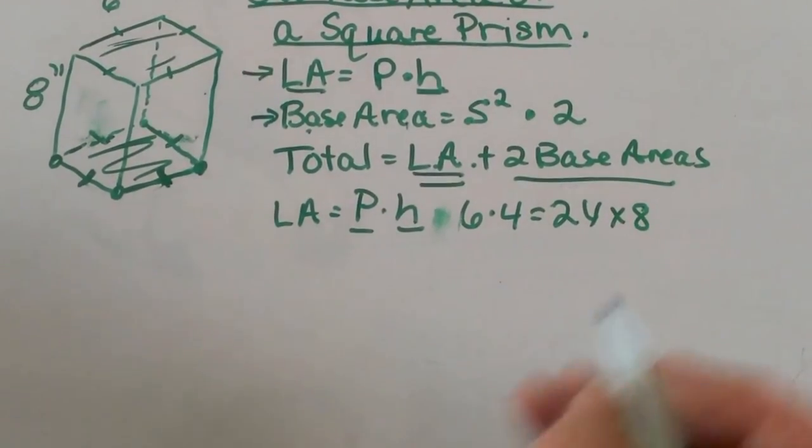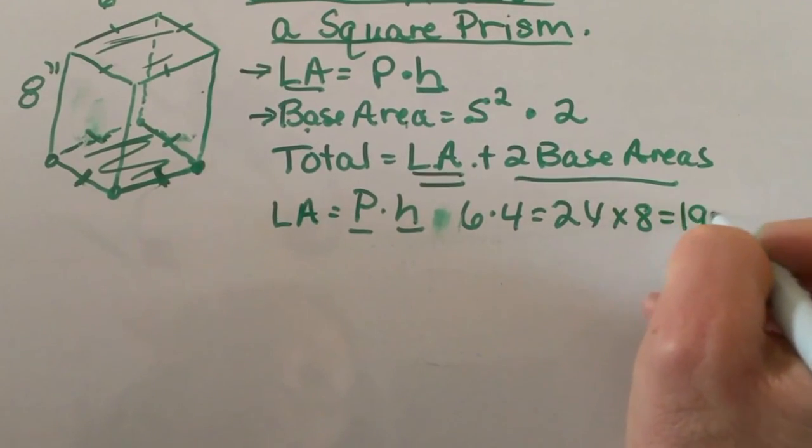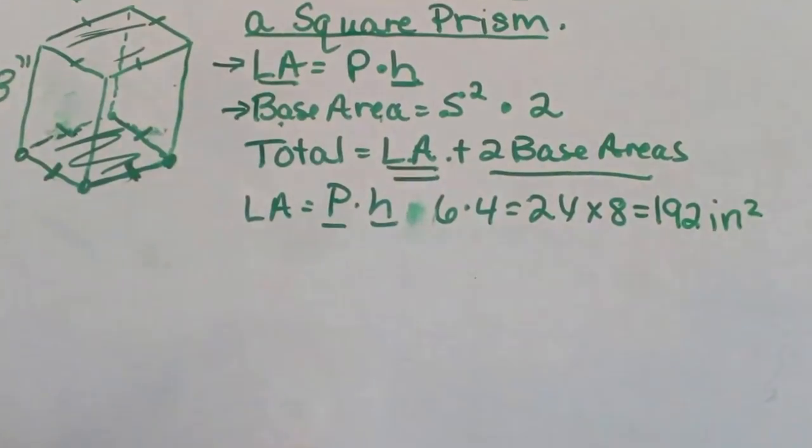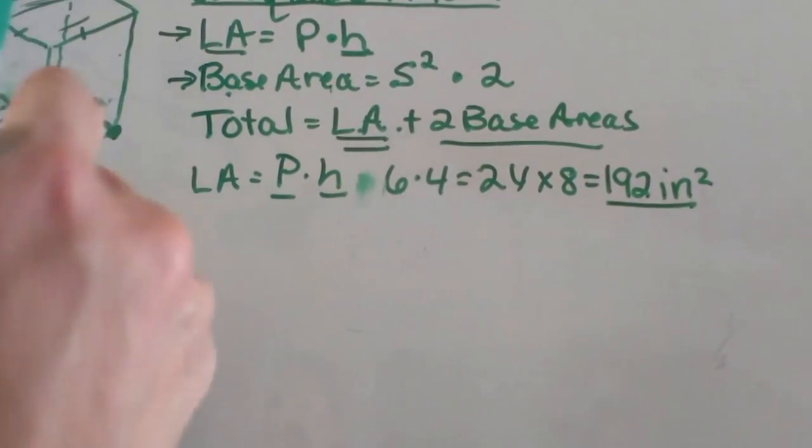So let's go over here and multiply that together. 24 times 8 multiplies to 192. And that's in inches squared. So that's our total lateral area or the sides that go around.